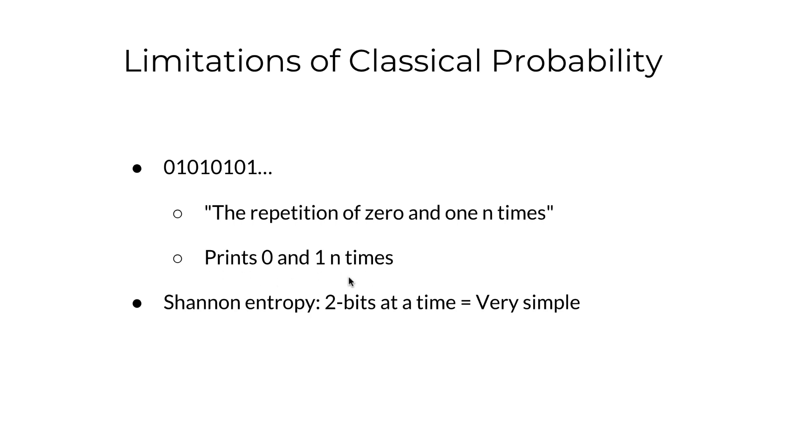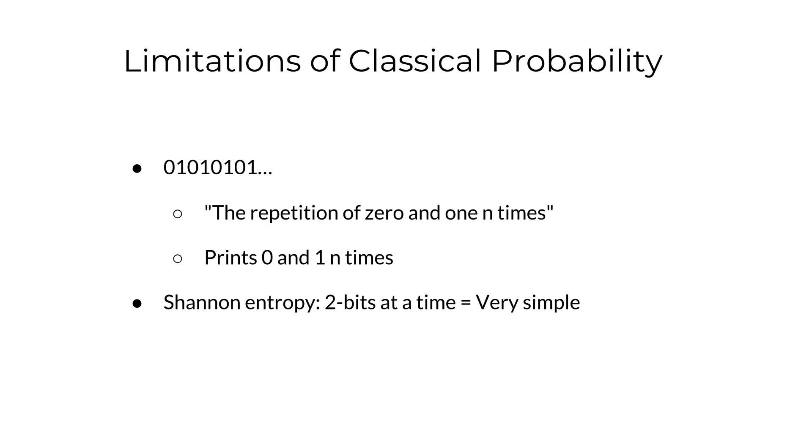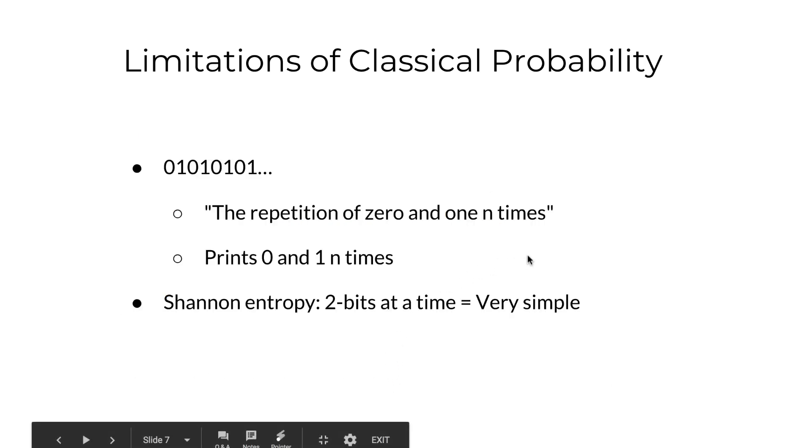In contrast, a more random looking string or sequence would require a longer description, perhaps requiring to call out every bit one by one. This is something that Shannon entropy in classical information theory can also capture with the right parameters in this particular case with this sequence.